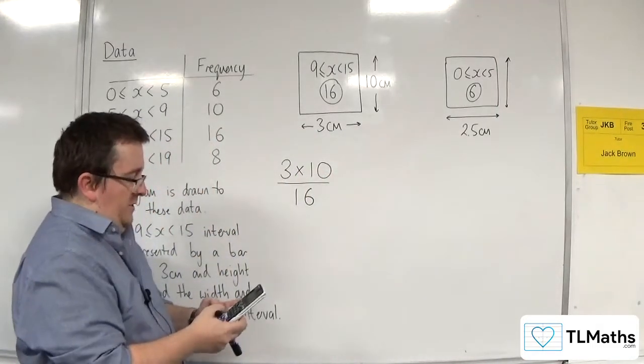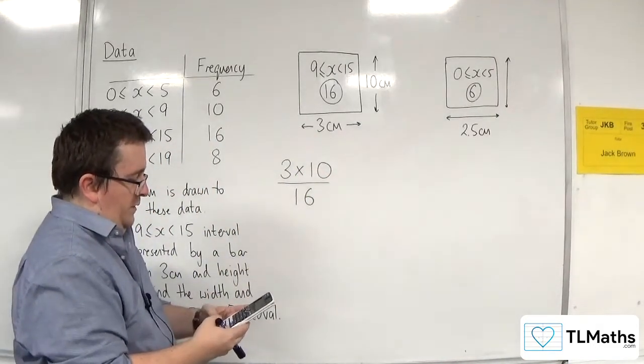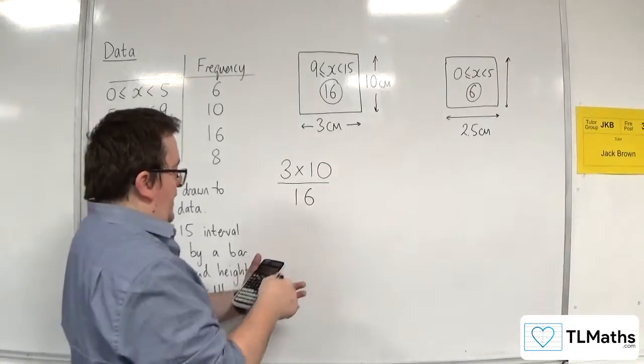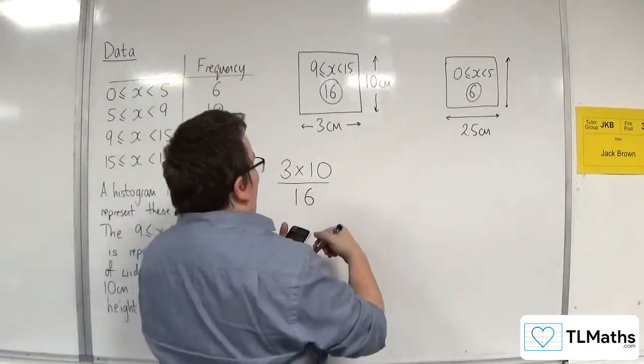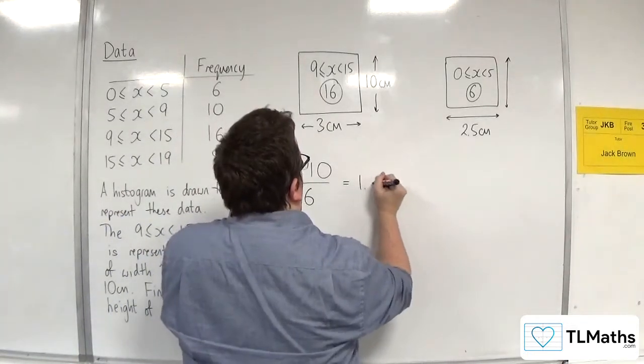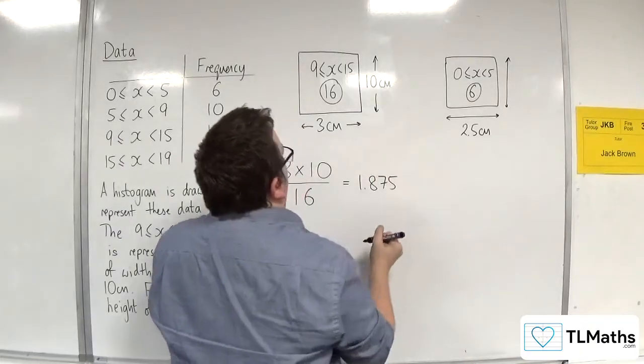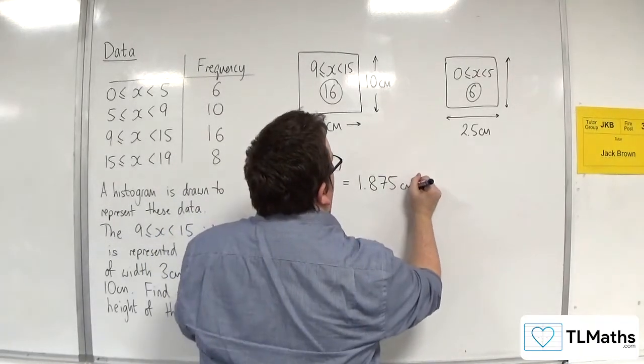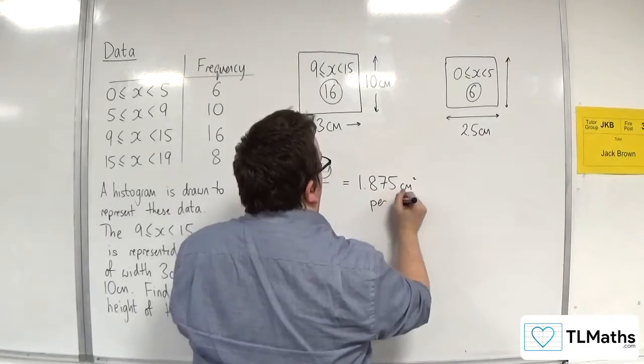So, 3 times 10, divide by 16, and we get 15 over 8. So, 1.875. 1.875.